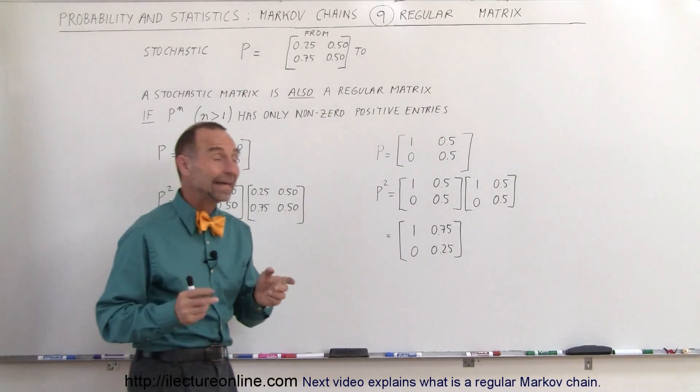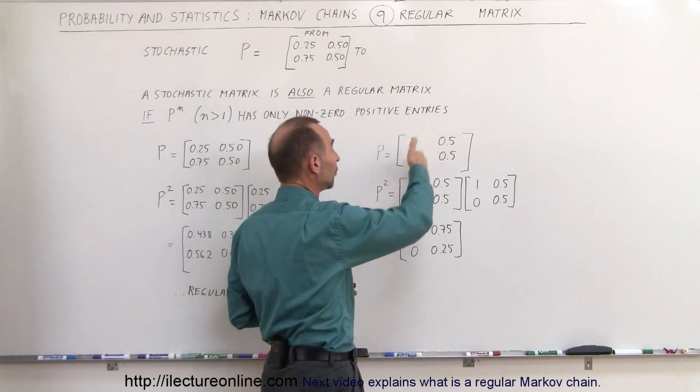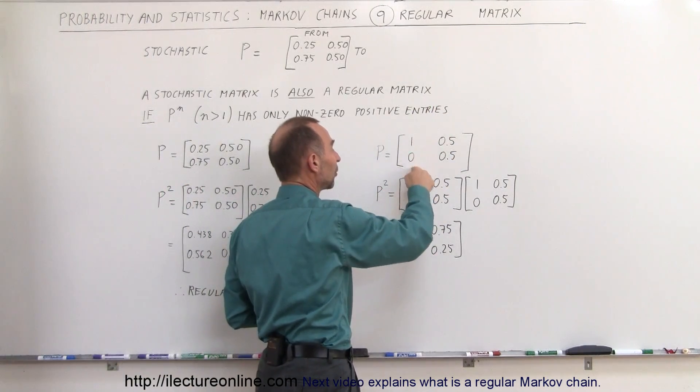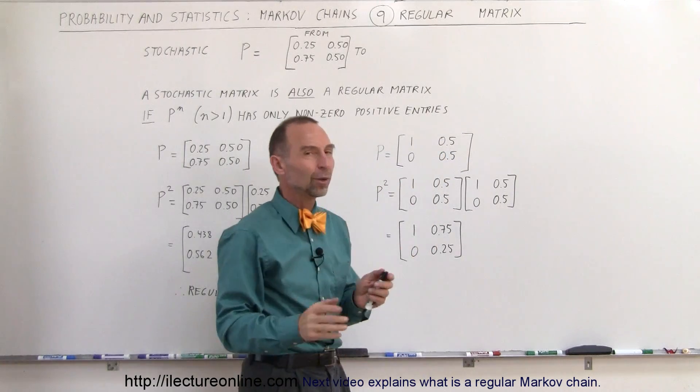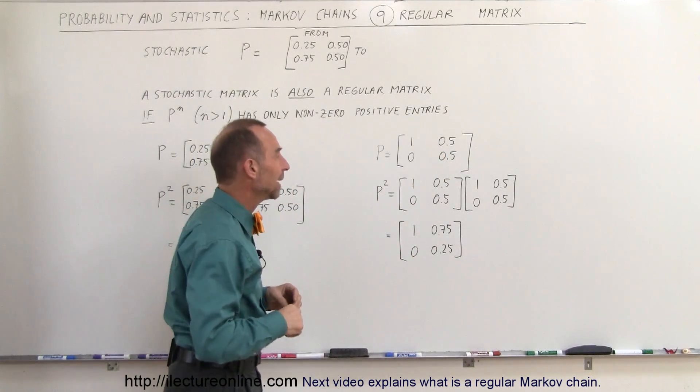Now the second matrix here, again it is stochastic because when I add the vertical columns together 1 plus 0 is 1, 0.5 plus 0.5 is 1, so it's stochastic. But is it a regular matrix?